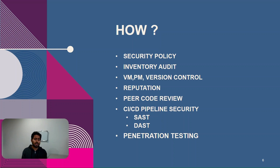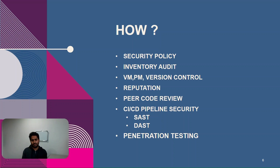When one developer is writing code, their peers should do a code review. If they see any anomaly, they can tag it and document it so that the original developer who designed the code can fix the vulnerability.